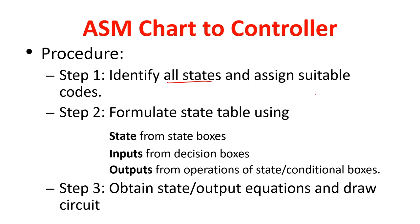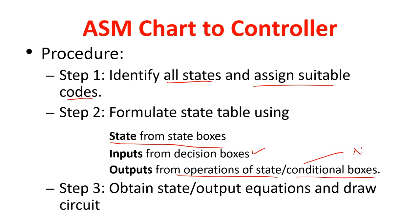Procedure to identify the controller: Step 1 — identify all states and assign suitable codes (state encoding). Step 2 — formulate the state table using state from state boxes, input from decision boxes, and output from state and conditional boxes. This gives next state and output logic. Draw the circuits — particularly next state logic and output logic.